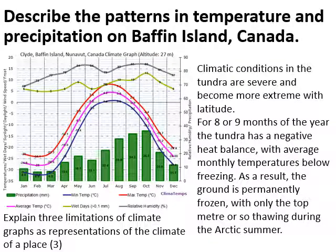Here we've got a climate graph from Baffin Island in Canada. Climate graphs show precipitation as the bar graph at the bottom — in this case it's green — and temperature. There are several different lines for temperature: the average temperature is in pink, maximum temperature is in red, and minimum temperature is in blue. What we can clearly see on that climate graph is the warmer summer period that the Arctic has.